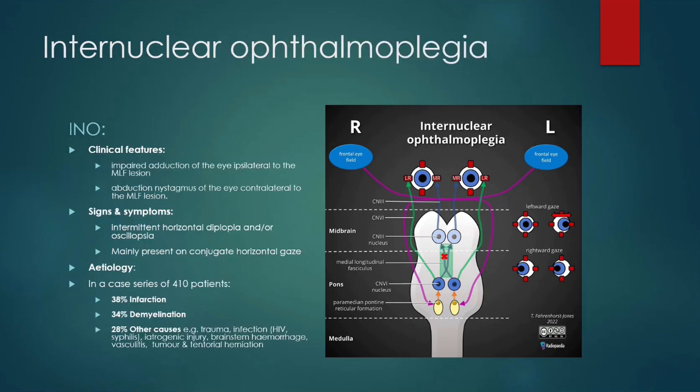In INO, there is a lesion in the medial longitudinal fasciculus. This causes a disruption in communication between the contralateral third nerve nucleus and the ipsilateral sixth nerve nucleus, resulting in impaired adduction of the eye ipsilateral to the lesion and abduction nystagmus in the eye contralateral to the lesion. Patients with INO can complain of intermittent horizontal diplopia and oscillopsia, with signs primarily elicited on conjugate horizontal gaze.